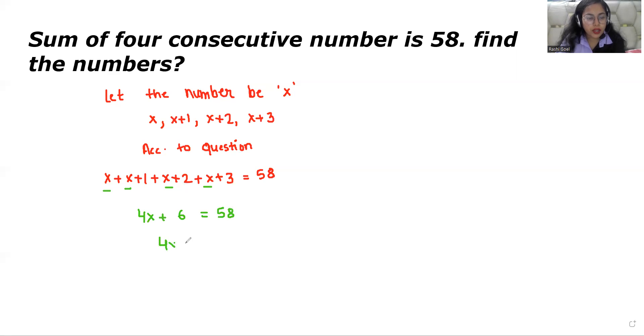Now, 4x equals 58 minus 6. 4x equals 52. Therefore, x equals 52 divided by 4. The value of x is 13.